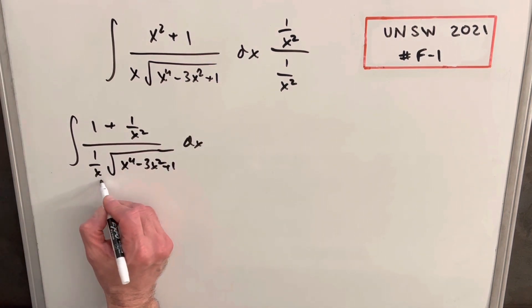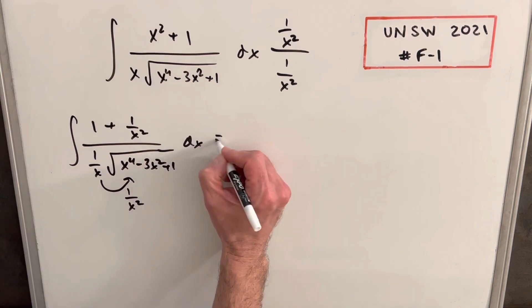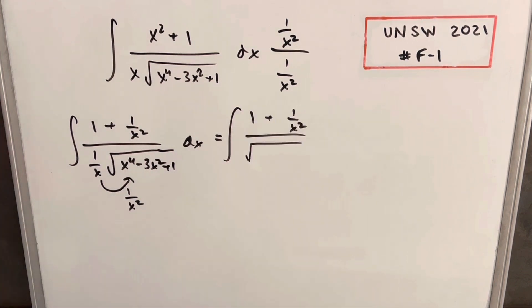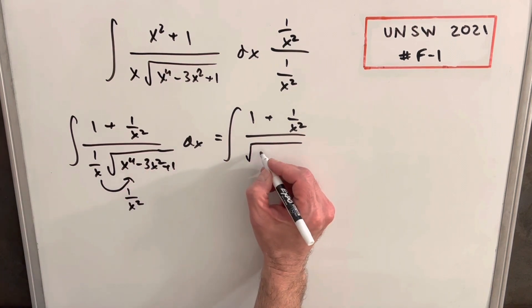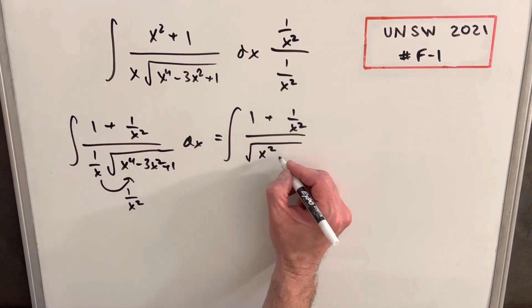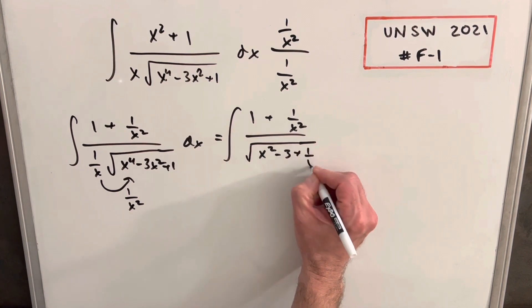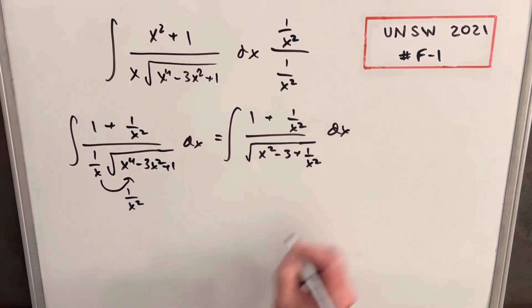From here, what I really want is I really want this to be multiplied inside the radical. So what I can do is multiply it inside the radical as 1 over x squared. So I'm applying 1 over x squared times x to the 4th. We're going to end up with x squared. Then 1 over x squared times minus 3x squared is going to be minus 3. And then for this last term, we're just going to have 1 over x squared dx.